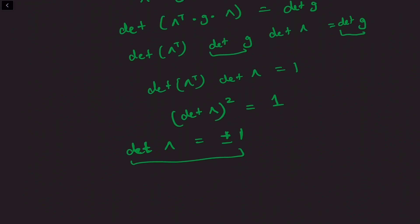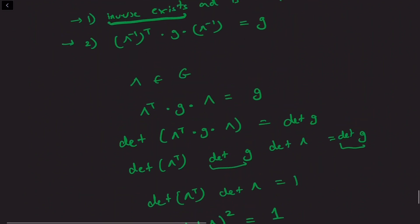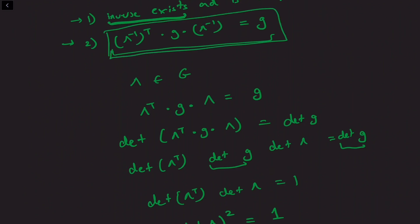Since the determinant of any element of this set is non-zero, the inverse matrix of lambda exists and is unique. Since the determinant is non-zero, lambda inverse exists and is unique — it is just the inverse matrix of lambda. Now we just need to check that the inverse matrix satisfies the same property, so that the inverse matrix belongs to the same set of transformations which preserve the metric.